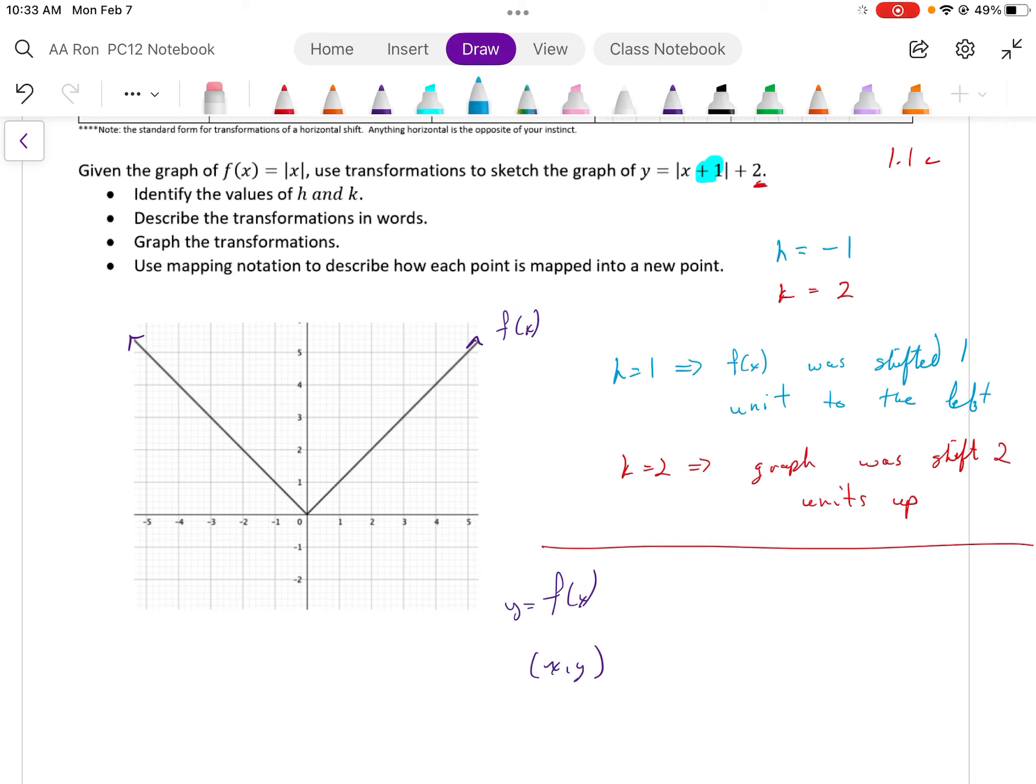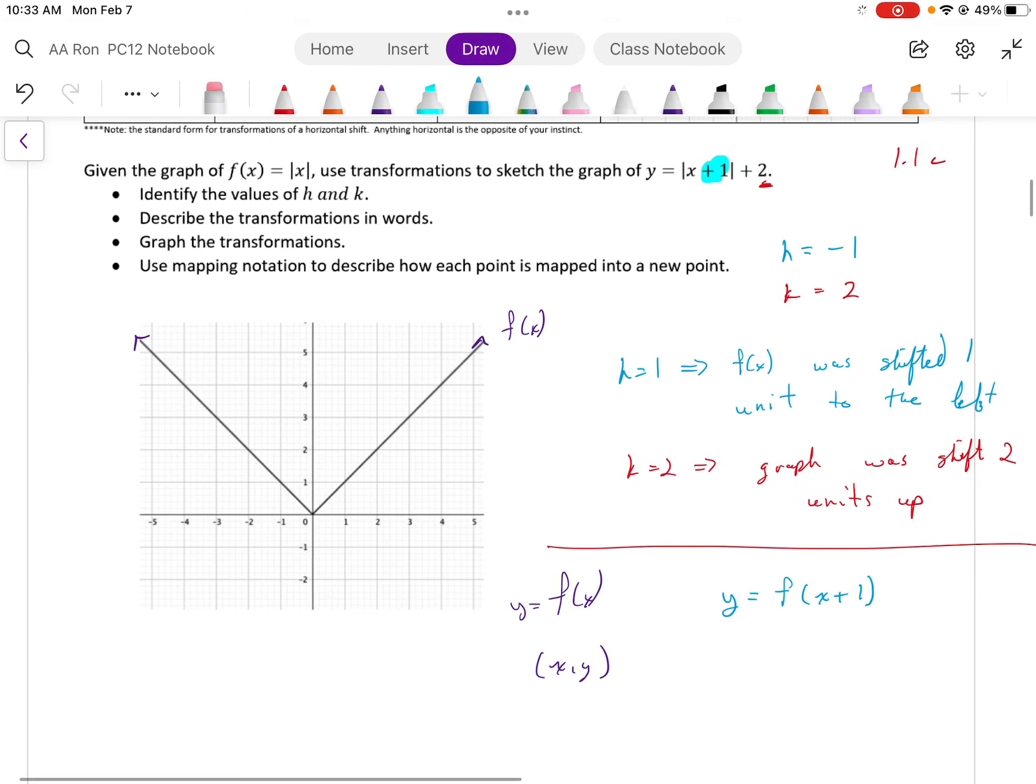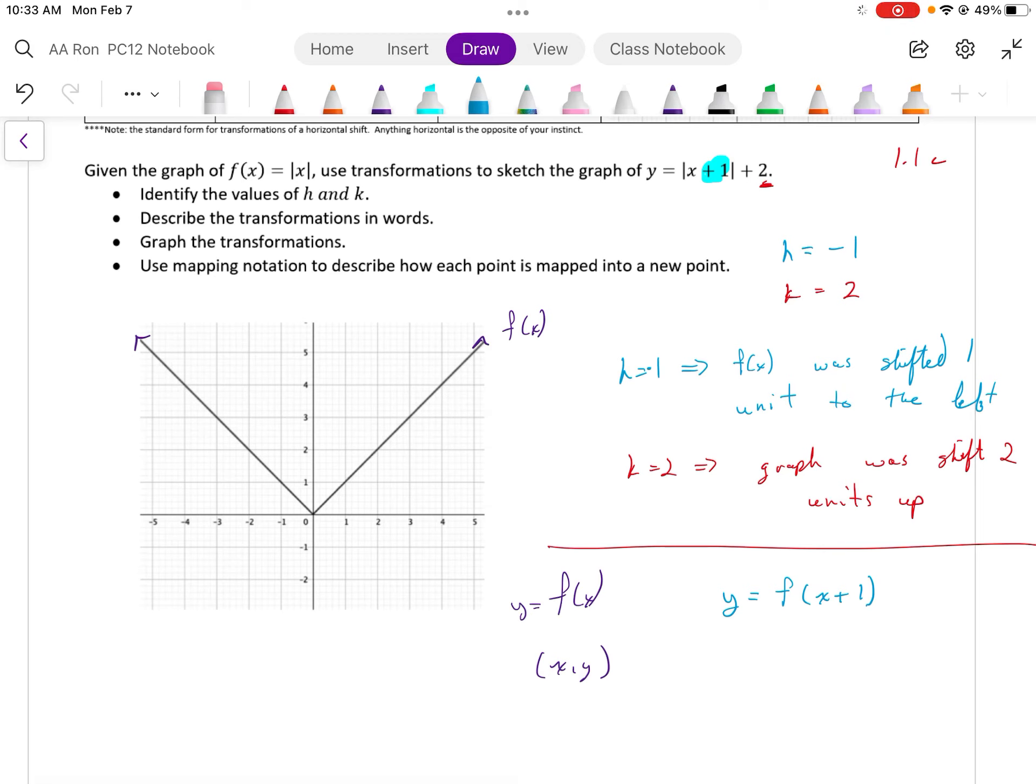But then I am going to look at my blue, and my blue says I need to shift two units to the left. So when I do that, it becomes y equals f(x plus 1). That is, we have an h that is negative 1. My mistake. So that negative should be there. And that's how it looks. And if I shift my point x, y, left, it implies that is x minus 1, y. That is, I only move the x coordinate left one unit.